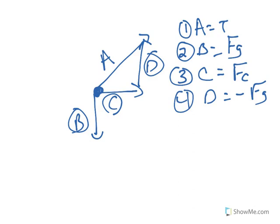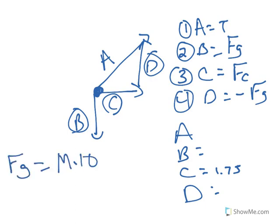Well, we've already calculated the centripetal force. So, I know C is 1.75. And, B, I can find really quickly, right? Because force of gravity equals mass times 10. So, the force of gravity should equal 0.2 times 10. And, that turns out to be 2 newtons. So, B is 2 newtons.